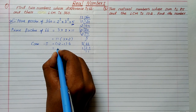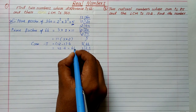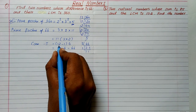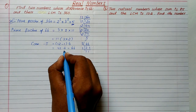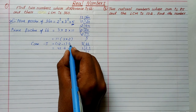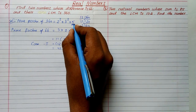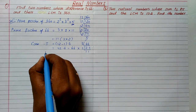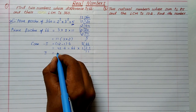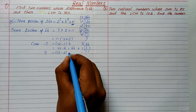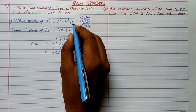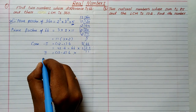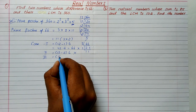Confirming case 1: 72 minus 6 gives 66, which matches the difference, but 72 does not have 5 as a factor, so it fails. Case 2: split as 13 minus 2. But 13 is a prime number and we don't have 13 in the LCM, so case 2 is also not possible.